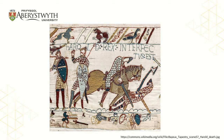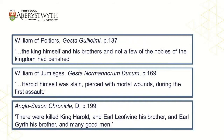It is therefore perhaps surprising that the earliest written Norman accounts of the Conquest do not mention the arrow story. The Gesta Guillelmi was written by William of Poitiers, who was a chaplain of William the Conqueror and was probably completed around the end of the 1070s. Yet despite its closeness to both the events and those who were involved in them, the Gesta Guillelmi does not say at what point during the battle Harold was killed or how he was killed. Indeed, we can see from the quote on the slide here that there are very few details given at all. Poitiers writes: 'the king himself and his brothers and not a few of the nobles of the kingdom had perished.'